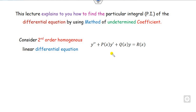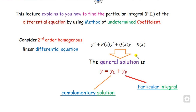As we discussed in the last class, the method of undetermined coefficients is used to find the particular integral. If you have a second-order differential equation where r(x) is non-zero, then you can find the general solution using the complementary part yc and the particular integral yp. This method will help you identify the value of yp, which you can find using the auxiliary equation.